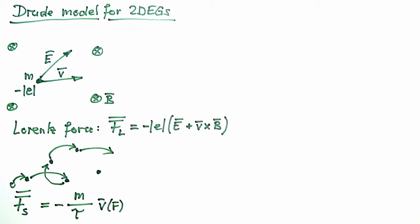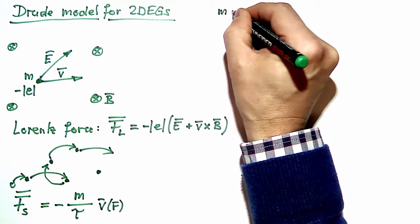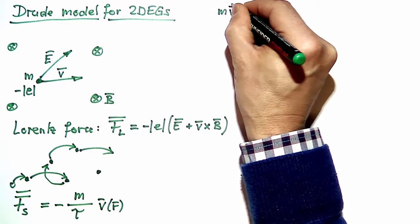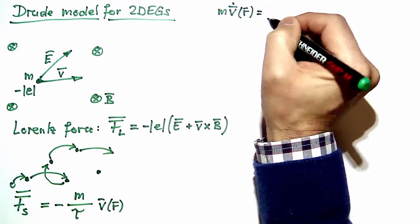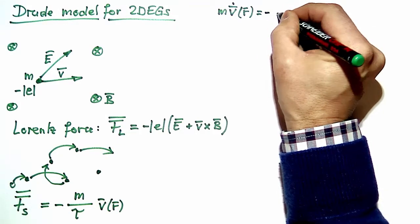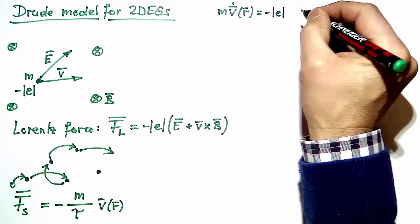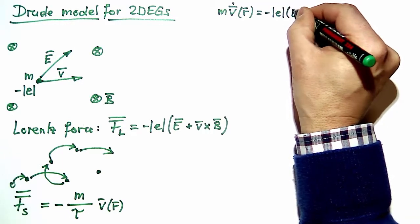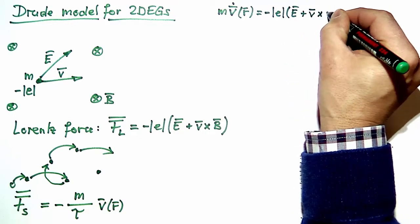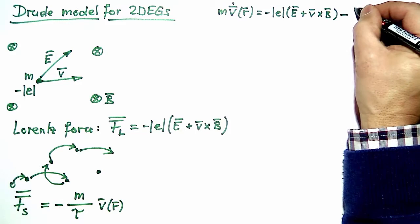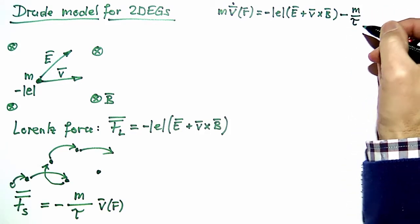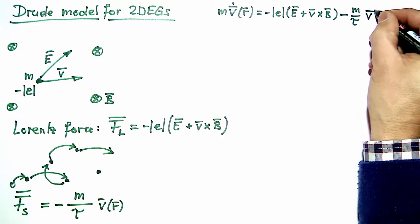Having these two forces we can now set up the classical equation of motion for electrons in the electron gas. Newton's equation reads: m·v̇(r) equals the Lorentz force, being the negative elementary charge times the electric field plus the velocity crossed with the magnetic field, plus the friction force, which is negative mass divided by the scattering time tau times the velocity v.